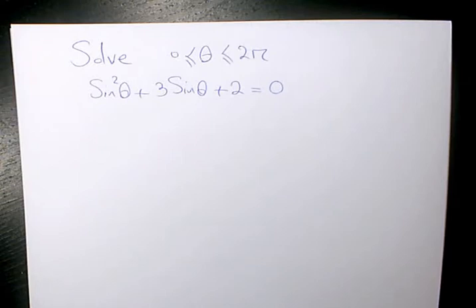The equation we have in this video is sine squared theta plus 3 sine theta plus 2 equals to 0. And we need to solve it for theta, and theta must be between 0 and 2 pi.